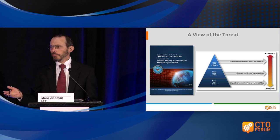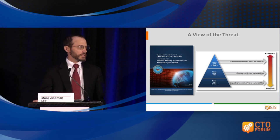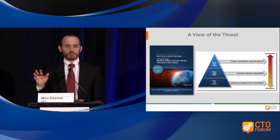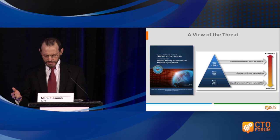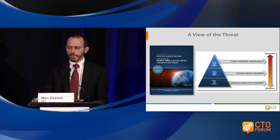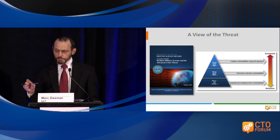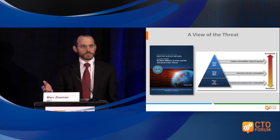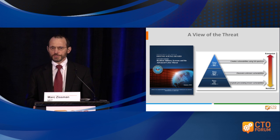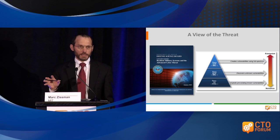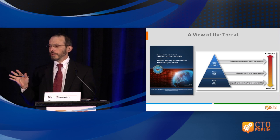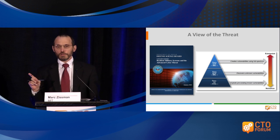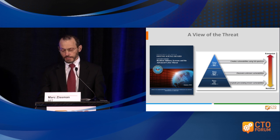What can a firm, what can an enterprise do to thwart these different kinds of adversaries? The folks at the bottom can be thwarted with what we would call good hygiene — good patching, good training of staff to make sure that people understand how to combat social engineering. The people in the middle, maybe it's some of the next generation security techniques. You have a shot at combating those folks. The folks at the top, there is nothing you can do as an enterprise to thwart that type of adversary.